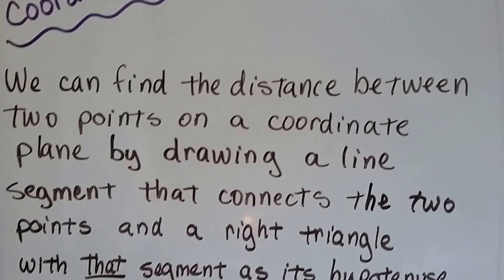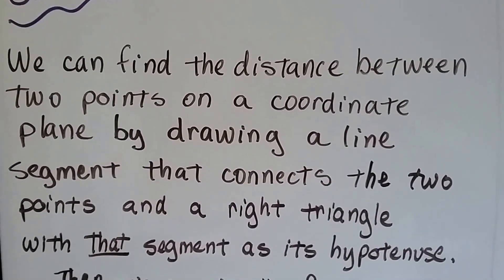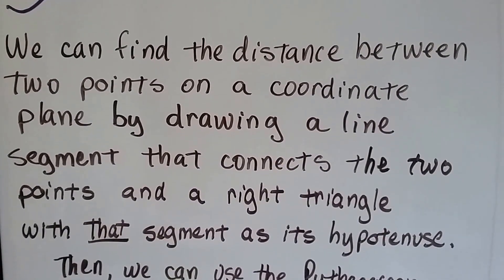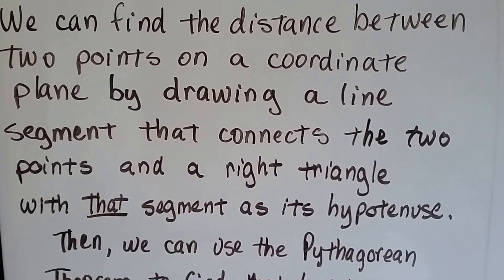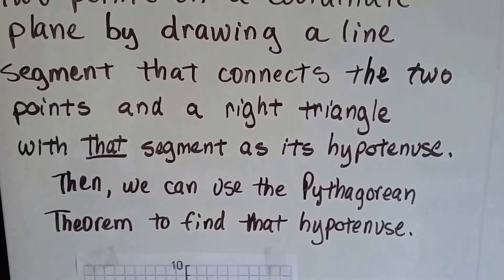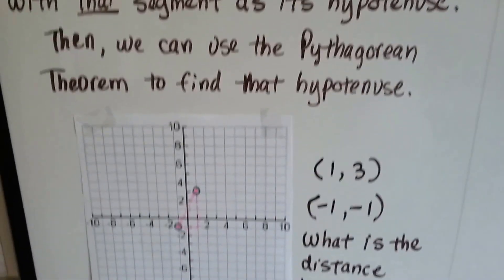We can find the distance between two points on a coordinate plane by drawing a line segment that connects the two points, and a right triangle with that segment as its hypotenuse. Then we can use the Pythagorean theorem to find the hypotenuse.